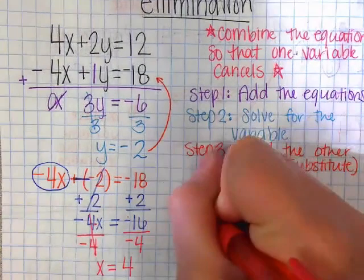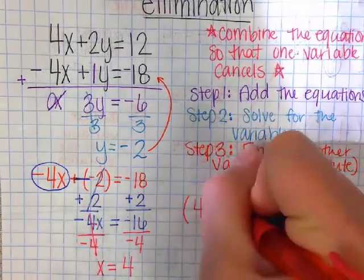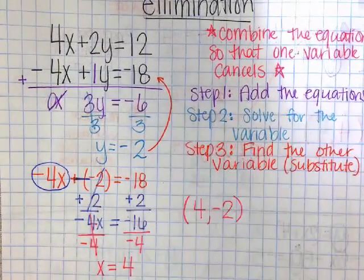So my answer would be, again, you have to write it in a coordinate form, 4 comma negative 2.